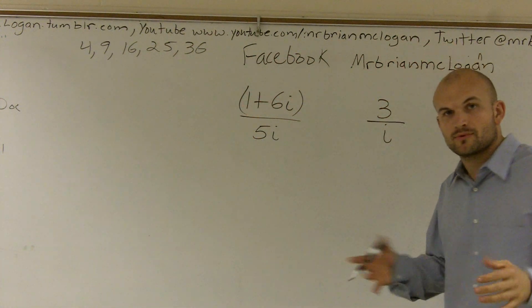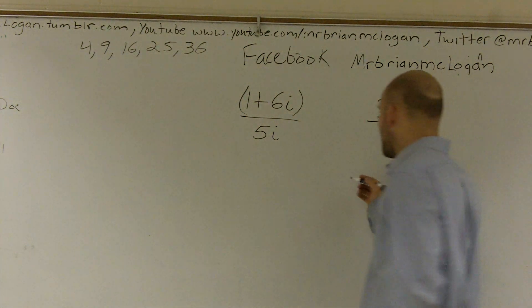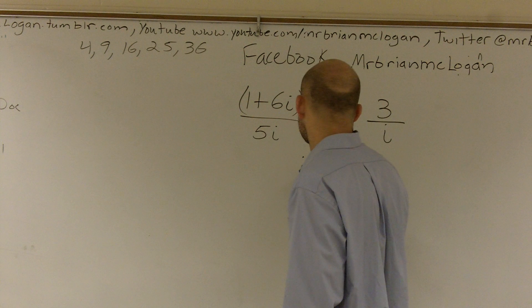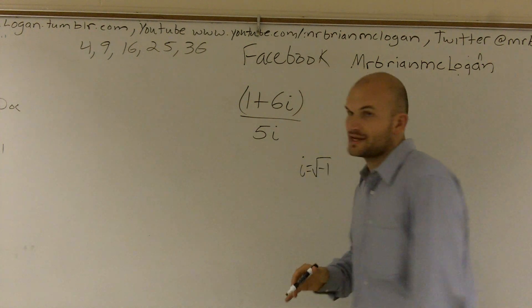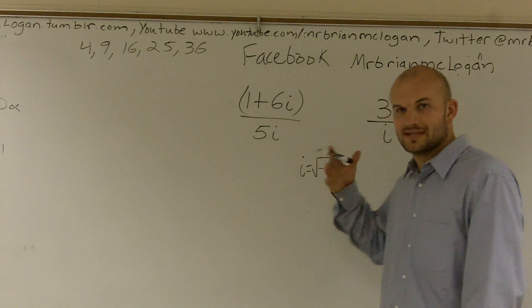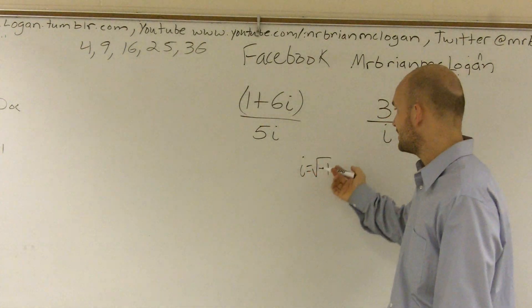Now, a couple of things you guys need to remember, when you have i on the bottom, i is our formation to figure out the square root of a negative number. We're going to pick that as negative 1. And the reason why is because negative 1 times any number is going to make that number negative.